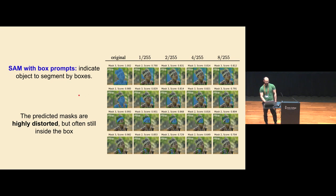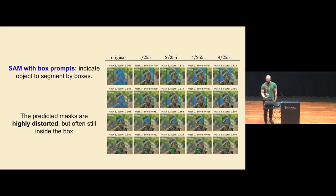We can do the same for box prompts, where the user gives a box to identify the object to be segmented. Box prompts are a bit harder to fool because they're richer than point prompts. But it still works pretty well — we observed that the predicted mask after the attack still belongs inside the box most of the time, but is kind of complementary to the true mask. The effectiveness also depends a bit on the size of the box.